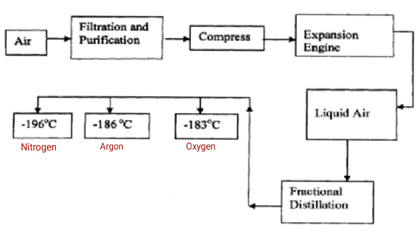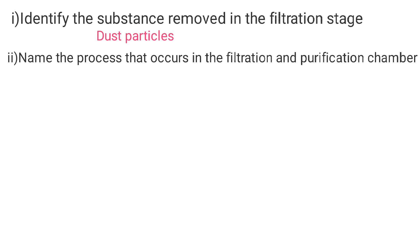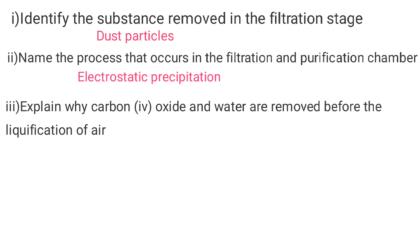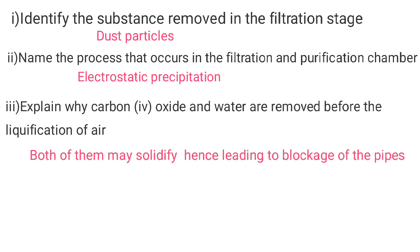That's the summary of the flowchart. Now let us go directly to the questions. Question 1: Identify the substance removed in the filtration stage — dust particles. Name the process that occurs in the filtration and purification chamber — electrostatic precipitation. Next question: explain why carbon dioxide and water are removed before liquefaction of air. The reason is that both of them may solidify, hence leading to blockage of the pipes.